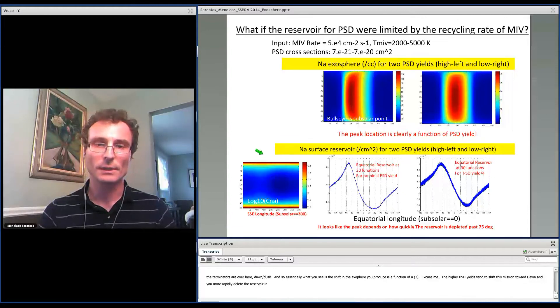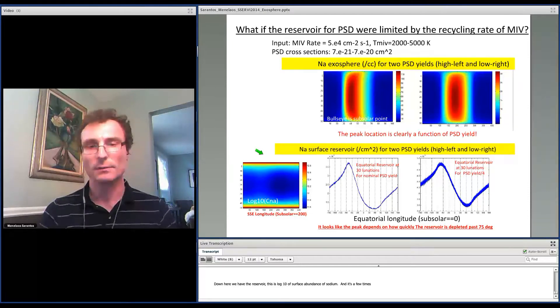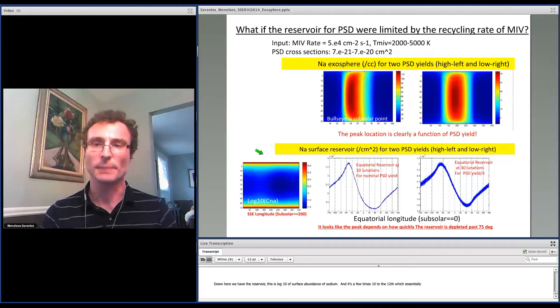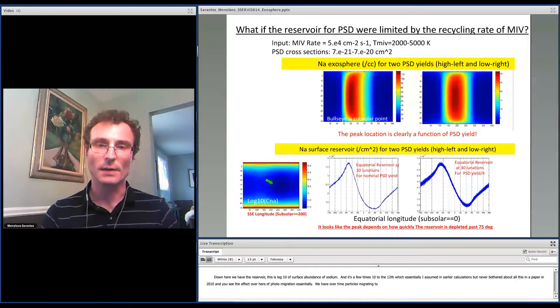Down here we have the reservoir—this is log 10 of surface abundance of sodium. It's a few times 10¹², which is essentially what I was assuming in earlier calculations. And you see the effect over here of polar migration, essentially. We have over time particles migrating to the poles, and that's where most of the reservoir is, whereas the reservoir near the equator is depleted.